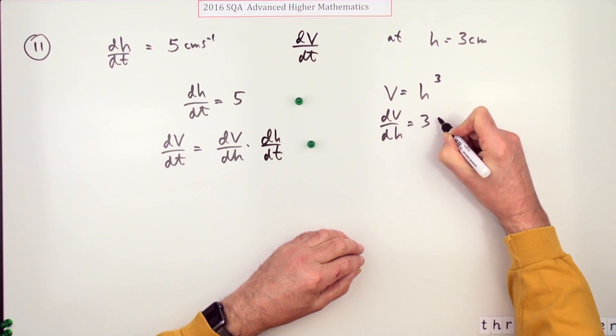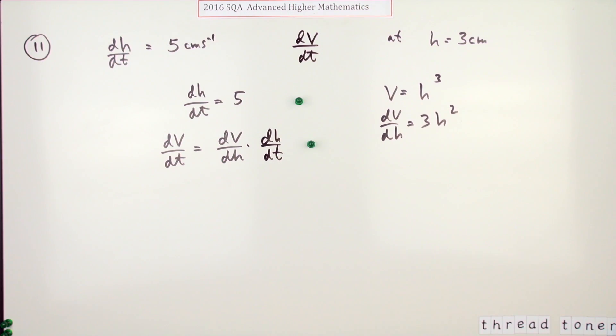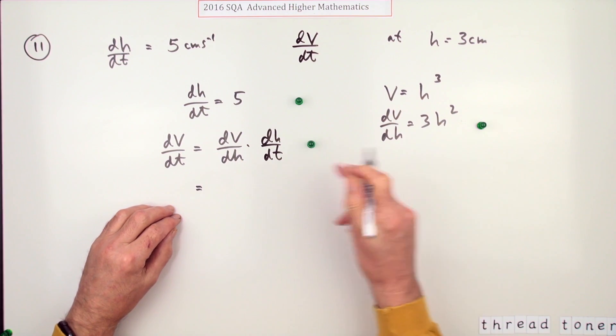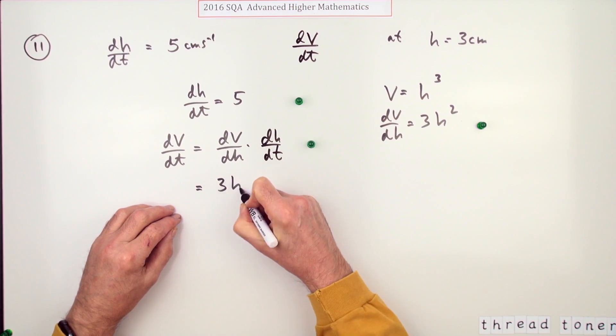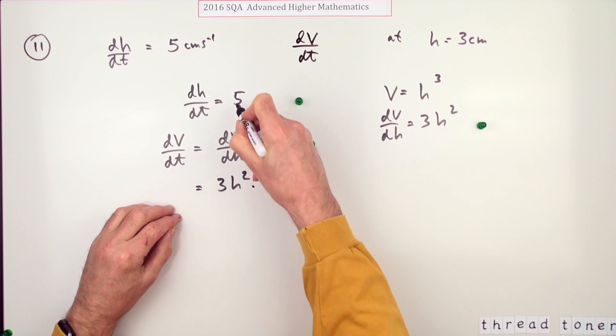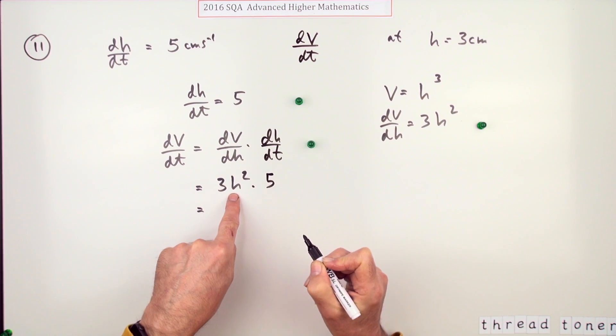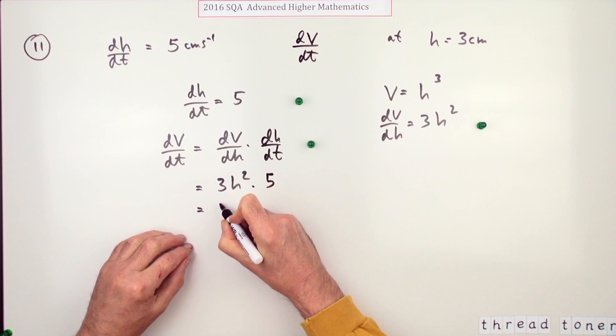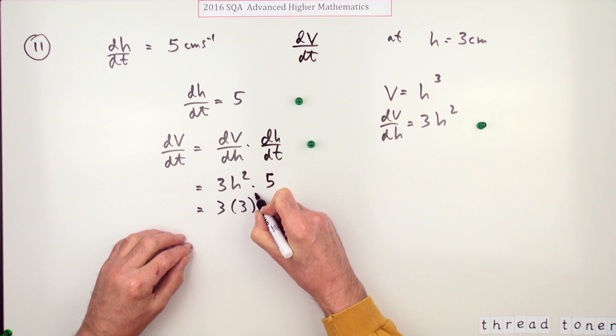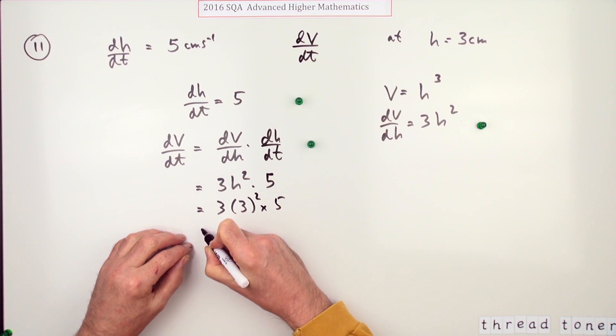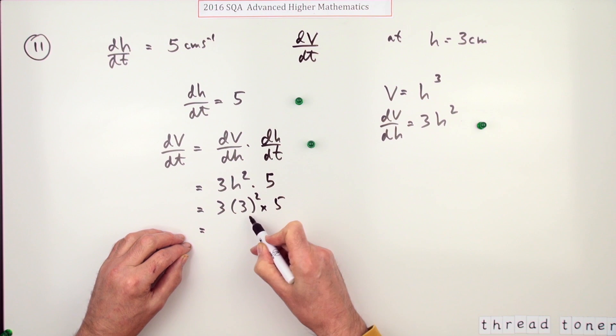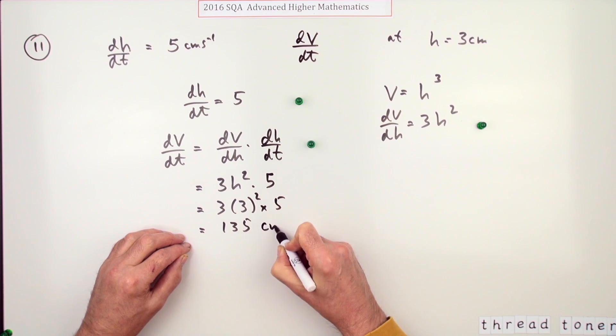Now you just got to put it all together. So what is dV/dt? It'll be 3h squared times, and that's just five. And it happens when h is three, so that's three times three squared times five, whichever way you like: 27 times five equals 135, that'll be centimeters cubed per second.